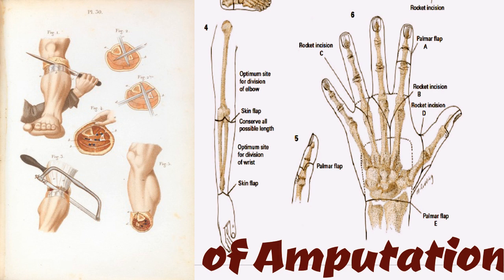The efficiency of modern prostheses has eliminated the time-honored sites of election. Generally, the pathology dictates the site of amputation, with the goal of preserving all possible length. This is particularly true of the upper extremity. The rule of saving all possible length does not apply necessarily to the lower extremity; however, whenever possible, the knee should be saved, since it provides major functional advantages.